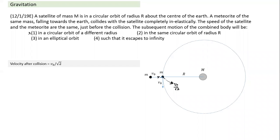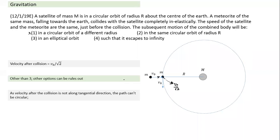Escape is also ruled out because velocity must be root 2 times the orbital velocity to escape. So all those options are out — the answer is that the combined mass will have an elliptical orbit. If velocity is slightly less than orbital velocity, it has an elliptical path. The key point: velocity is not purely tangential, so circular orbit is impossible. To escape, velocity must increase by a factor of √2 compared to orbital velocity at that point.